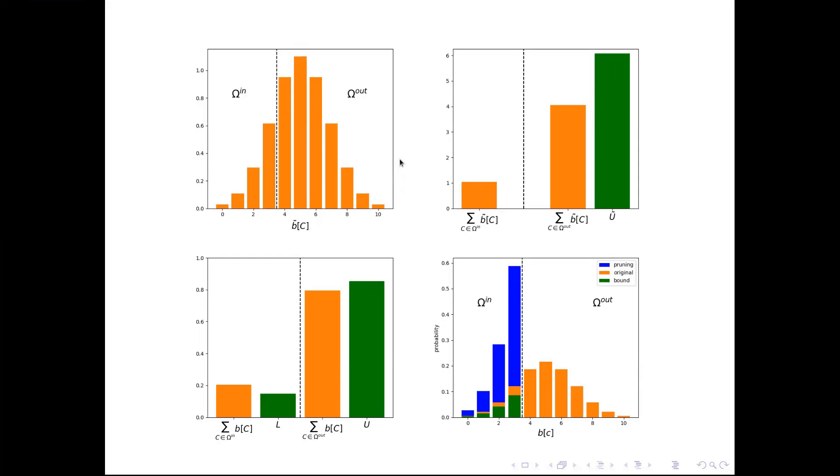Then if we bound it from above, we can bound from below the normalization factor, and then the probabilities, and so on.